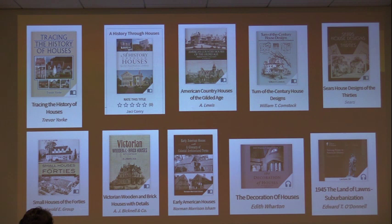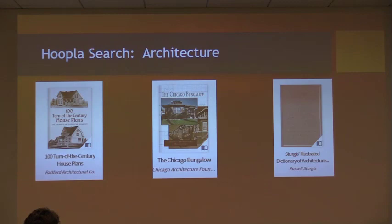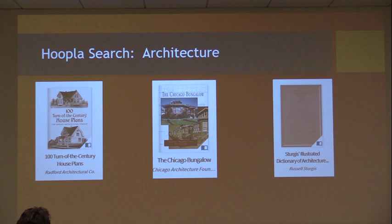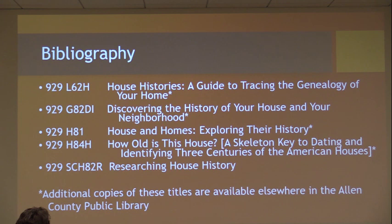This one still is house history — turn of the century house designs telling you what the house would look like at a certain time frame, so that gives you an idea how old your house could be. When I looked for architecture, I pulled up these three. Turn of the century house plans — 100 of them in one of the books. That would be interesting to just go look at what your house could have been or should have been before someone remodeled it and broke down walls. This is a bibliography, which you will find on your little pathfinder here. I starred the ones where you can find them in another location of the library.